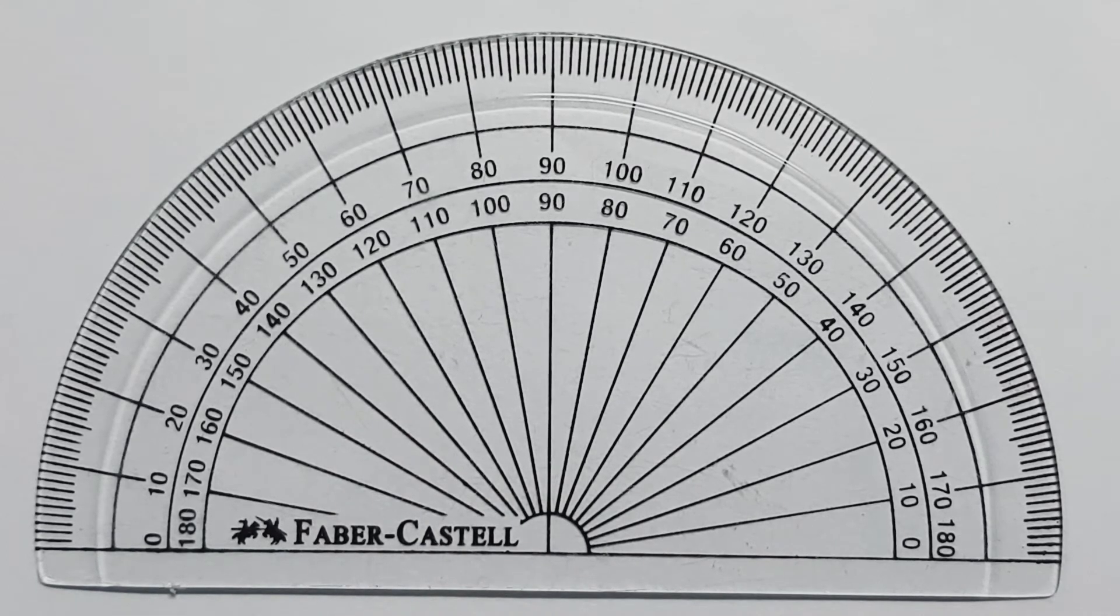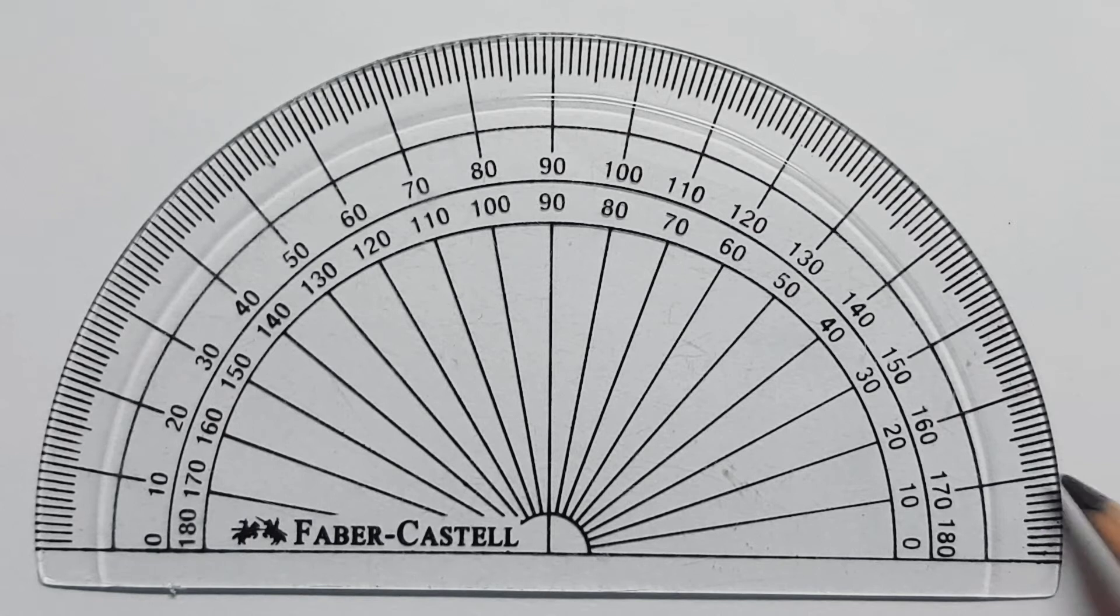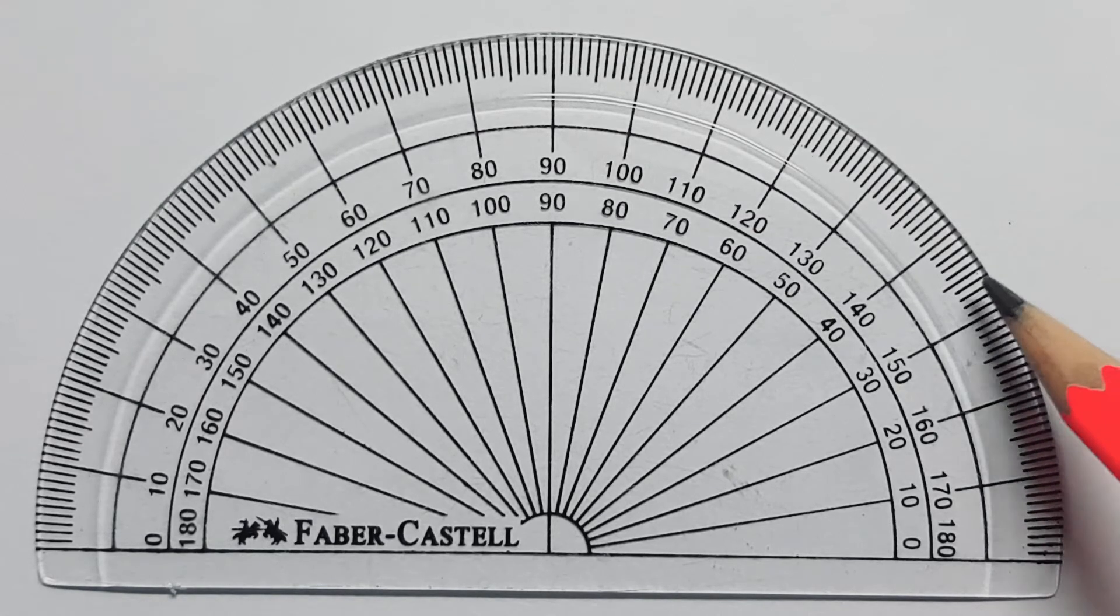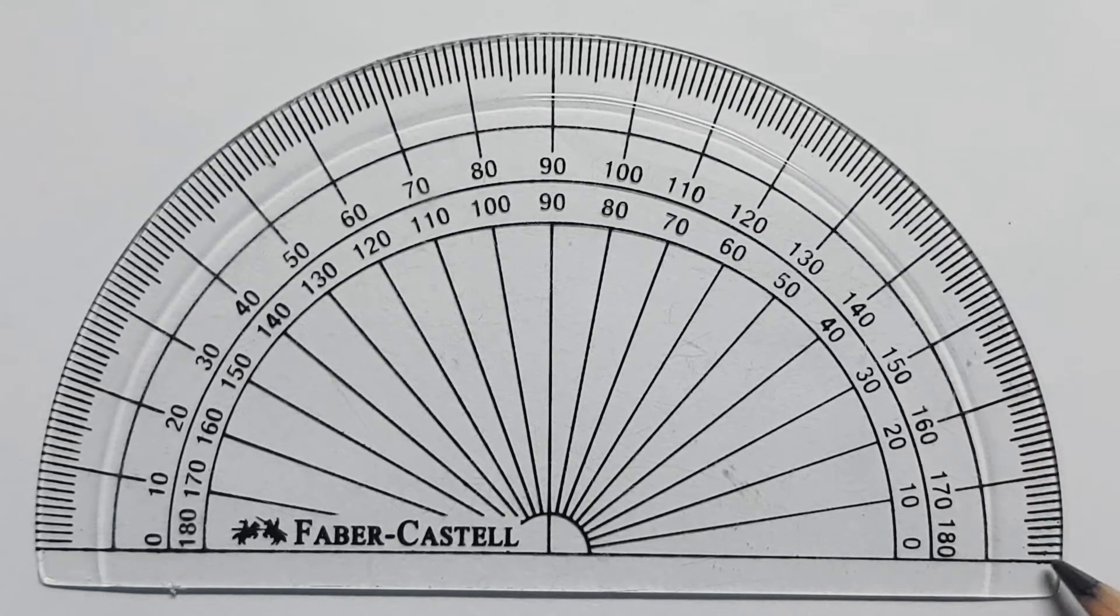If you see carefully, you will notice that there are tiny markings on the protractor. These markings are called degrees and each unit represents each degree. Now, I will show you how to read the protractor.